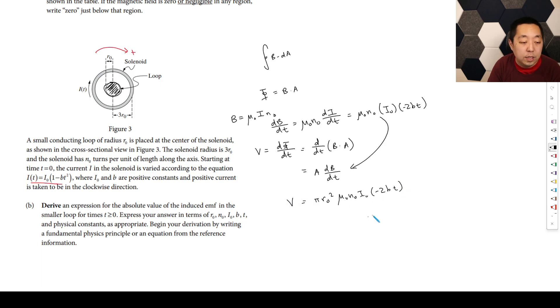Now what's the area of the loop? It's pi times R0 squared, because the flux is through this loop, not through the whole solenoid. So that's going to be times mu naught N naught I0 times negative 2BT. That's the induced EMF. And then they just want the magnitude, so you can drop the negative sign. So it's going to be 2 pi R0 squared mu naught N naught I naught BT. That would be the derivation there.